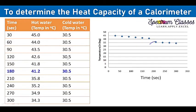So from the lab activity we have this observation table. Here the time is mentioned in seconds, here is the temperature in degrees centigrade for the hot water showing how it changes, and here is the temperature of the cold water. I have highlighted this row in blue — this suggests the time of mixing. So up to this point the temperature of the hot water decreases, and after this we have mixed the hot water to the cold water, and then these are the values for the mixture.